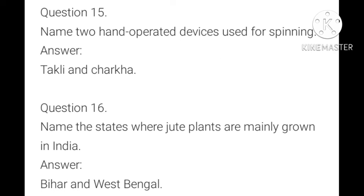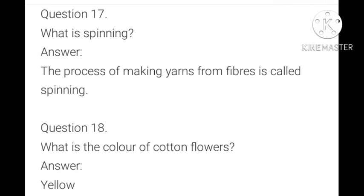Name two hand-operated devices used for spinning. Takli and Charkha are two hand-operated devices used for spinning. Name two states where jute plants are mainly grown in India. Bihar and West Bengal. What is spinning? The process of making yarns from fibers is called spinning.